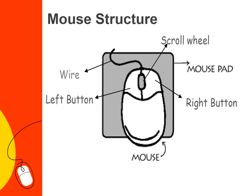Now we will see the structure of the computer mouse. It has a wire, a left button, a right button, a mouse pad, and a scroll wheel.